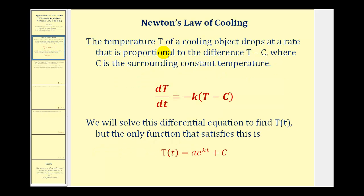The temperature T of a cooling object drops at a rate that is proportional to the difference T minus C, where T is the temperature of the cooling object and C is the constant temperature of the surrounding environment. We can express this as dT/dt equals negative K times T minus C. This is telling us the change in temperature with respect to time of the cooling object is equal to the opposite of a constant times the quantity T minus C.